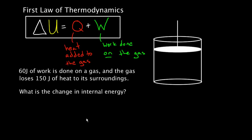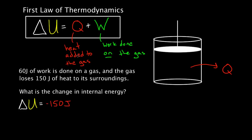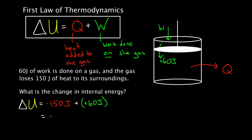We're going to use the first law — that's what it lets us determine. The change in internal energy equals the heat added to the gas plus the work done on the gas. The gas loses 150 joules of heat to its surroundings, so heat left the gas — that's negative 150. A lot of people just stick 150 here, but it's got to be negative 150 because Q represents heat added to the gas. And 60 joules of work is done on the gas, so that's a positive contribution — positive 60 joules.